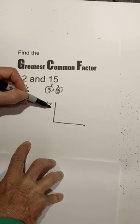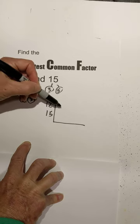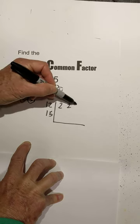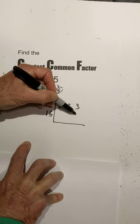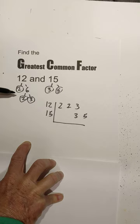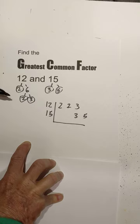I now place both numbers in a chart. So I will write the 2, the 2, and the 3, which are the prime factors of 12, and then the 3 and the 5, which are the prime factors of 15.